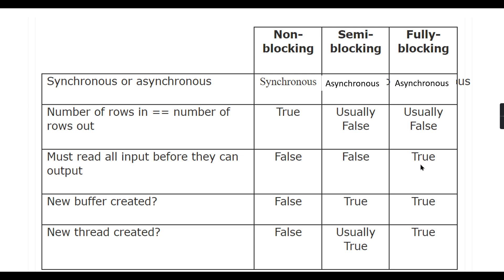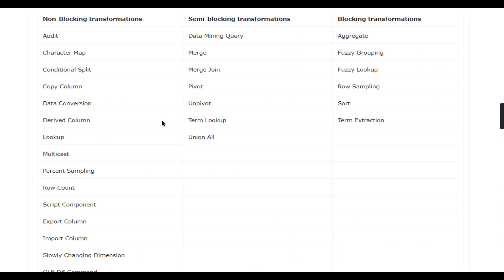For example, if you have one million records and want to group by location with 10 distinct locations, the output will be only 10 records — so all one million records must be read before processing. This is what 'fully blocking' means. All input resides in memory, which is very risky. For non-blocking, no new buffer is created. For fully blocking, a new buffer and new thread are created.